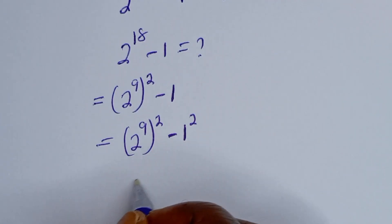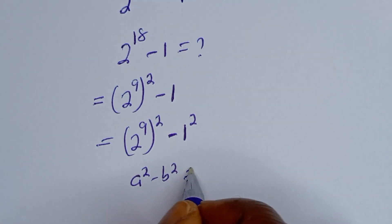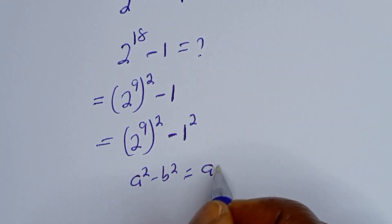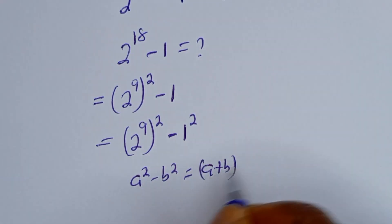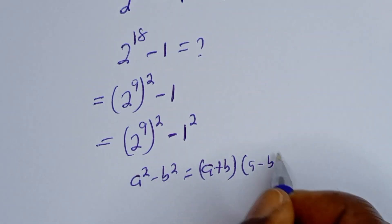Take note that if you have a squared minus b squared, this is equal to a plus b, bracket a minus b.